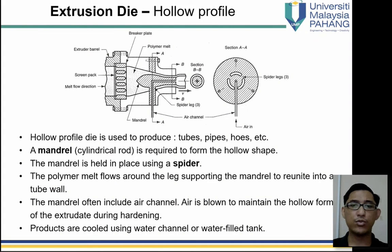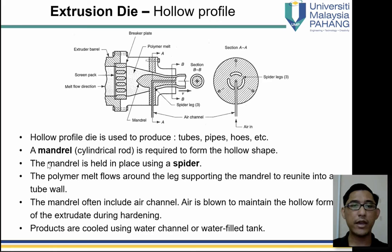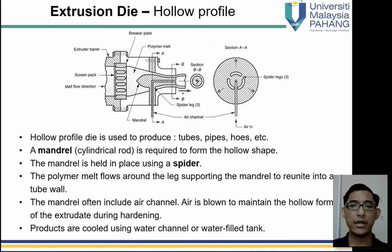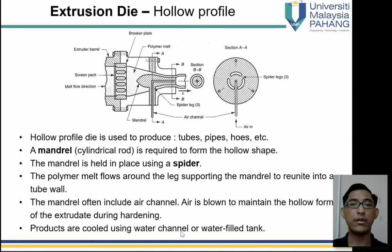For hollow profiles, a die is used to produce the pipe shape, and a mandrel — a cylindrical rod — is required to form the inner bore. The mandrel is held in place using a spider. The polymer melt flows through the spider legs supporting the mandrel and reunites into a tube. The mandrel often includes an air channel; air is blown in to maintain the hollow form during hardening. The process is then cooled using water channels or a water tank.